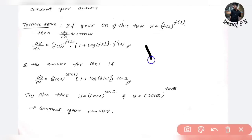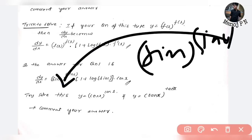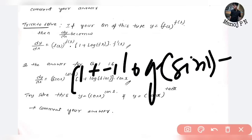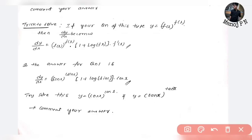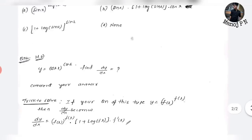So what is sin to the power of sin x? y is equal to sin(x) to the power of sin(x). Applying the formula: as it is, sin(x)^sin(x), multiplied by (1 plus log of sin x), multiplied by the differentiation of sin x, which is cos x. This is the solution.